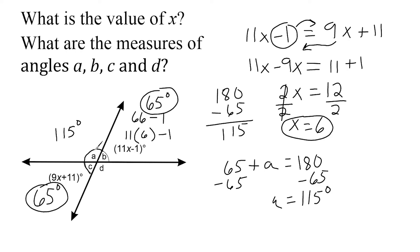So we know that angle A is 115, angle B is 65, and angle D must be 115 degrees, because angles A and D are vertical to each other. And vertical angles are always congruent.